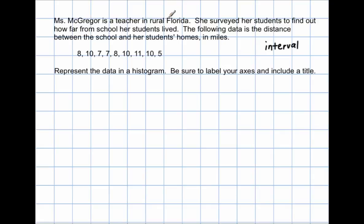Ms. McGregor is a teacher in rural Florida. She surveyed her students to find out how far from school her students lived. The following data is the distance between the school and her students' homes in miles. When I see 8, this represents one student who lives 8 miles from school; 10 represents another student who lives 10 miles from school; 7 represents one student who lives 7 miles from school, and so on.